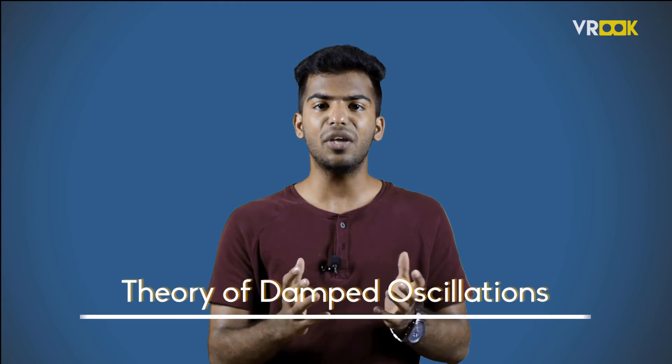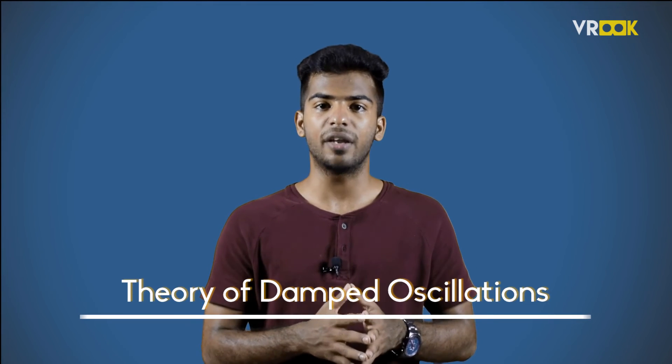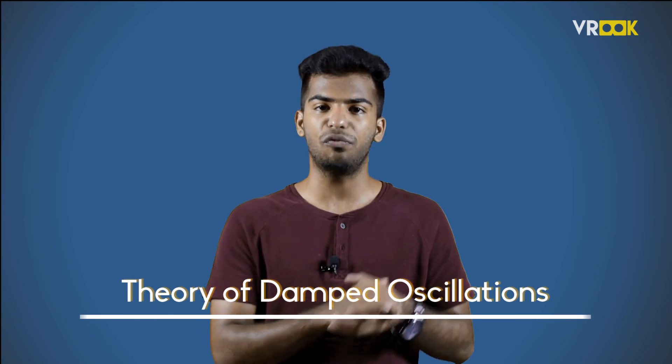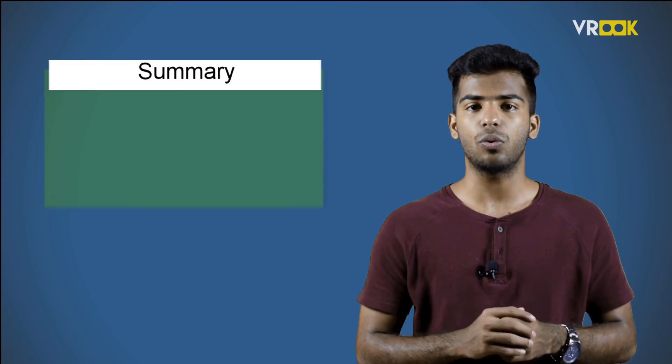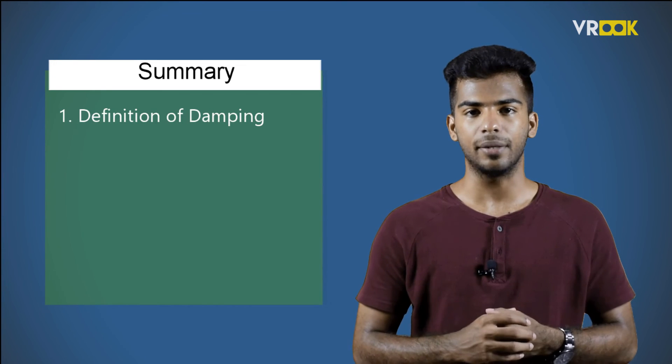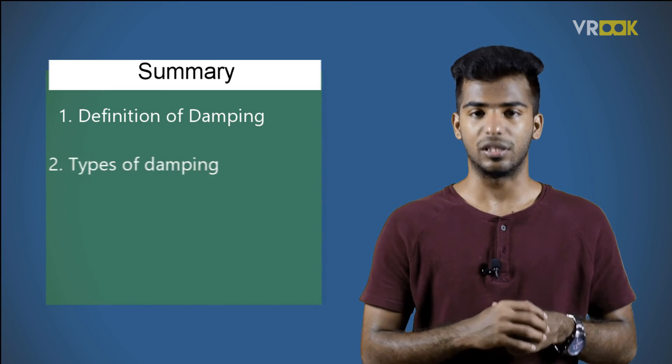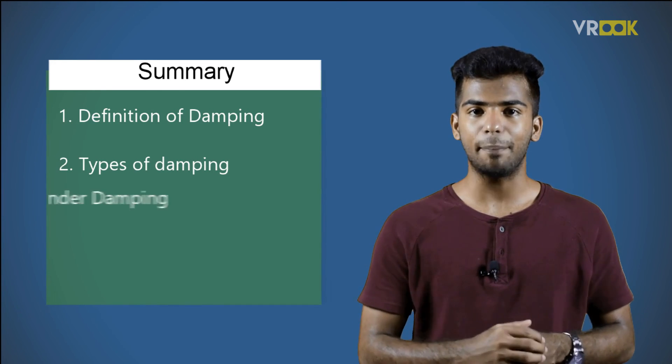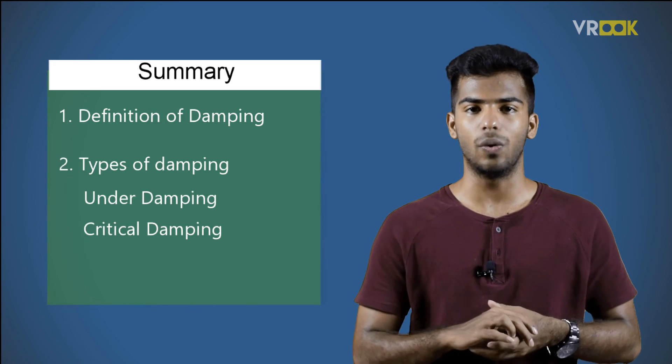So, this is about the theory of damped oscillations, where we can decrease the amplitude of the oscillations using various methods. Damping has a lot of applications, be it your pushback chair, the car suspension, and many other things. To sum up, we learnt about the definition of damping and types of damping such as underdamping, critical damping, and overdamping.